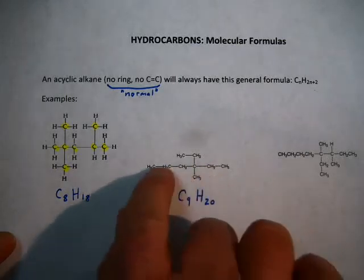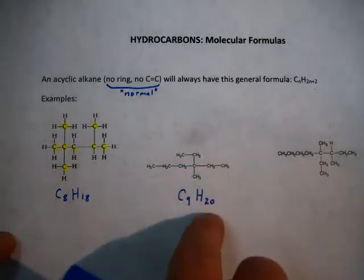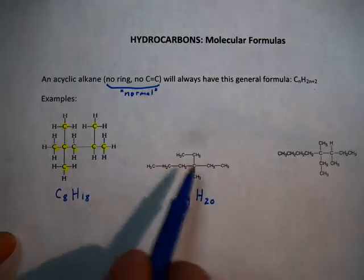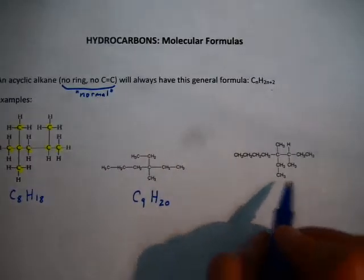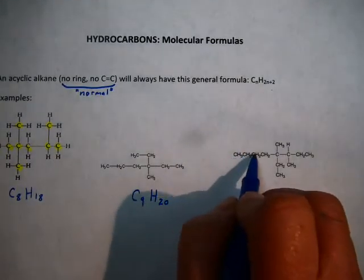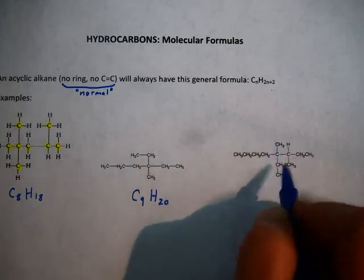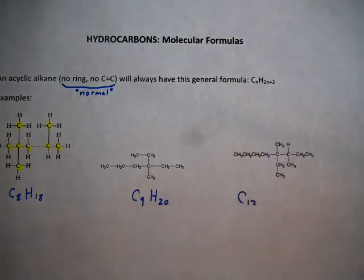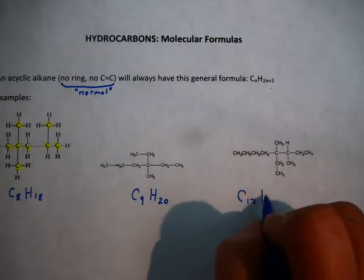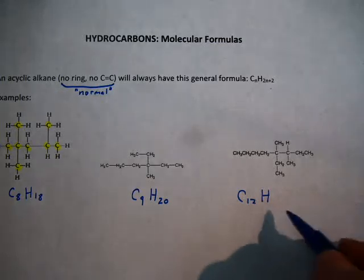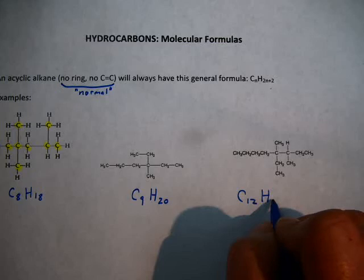You can double check it by counting the hydrogens, but this is kind of a nice shortcut to notice so that you don't have to count. No ring, no double bonds, so this will be the formula. And one more example here. 1, 2, 3, 4, 5, 6, 7, 8, 9, 10, 11, 12. That's C12. Again, no ring, no double bond. So the number of hydrogens must be double the carbons, which would be 24 plus 2 is 26.